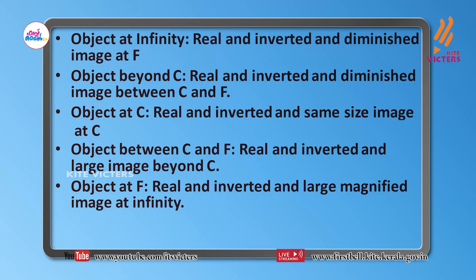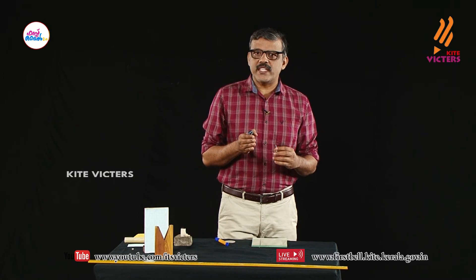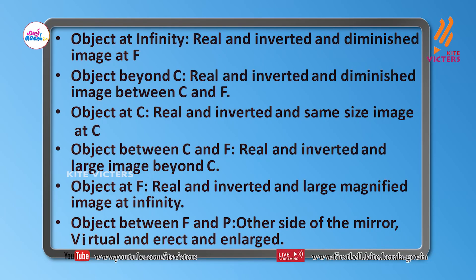When the object is placed at F, the image is formed at infinity — it is an enlarged, real, and inverted image. Finally, when the object is placed between F and P, the image forms behind the mirror. The nature of that image is erect and virtual, and the size of the image is large.